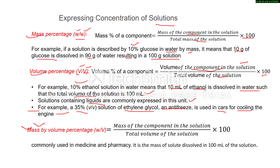Next is mass by volume percentage (w/v): we take the mass of solute and volume of solution. Mathematically, it equals mass of the component divided by total volume of the solution, multiplied by 100. This w/v unit is generally used in medicine and pharmacy — it represents the mass of solute dissolved in 100 ml of solution.